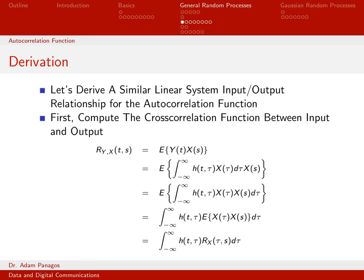We've derived an expression that lets us compute the output mean function of a linear system given the input mean function. What we want to do now is derive a similar input-output relationship for a linear system, but this time for the autocorrelation function. Given some linear system and given a random process as the input with a known autocorrelation function, we'd like to compute the autocorrelation function of the output as a function of our system and the input autocorrelation function.